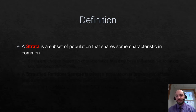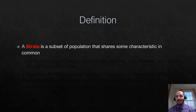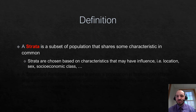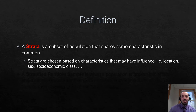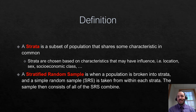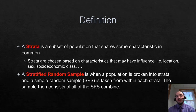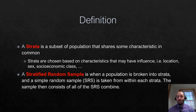So stratified random sampling — what is it? It starts out with the concept of a strata. Within populations, we likely have different subgroups that share similar characteristics. A strata is exactly that: a subset of the population that shares a characteristic of interest. You would choose your strata based on a characteristic that you think is going to impact your survey or sample. It could be sex, socioeconomic class, location, anything.